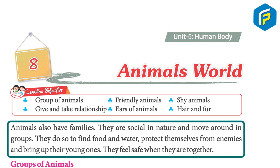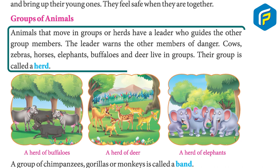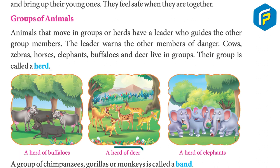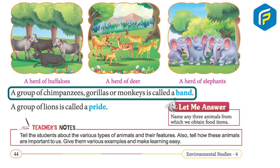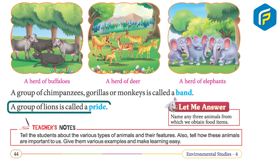Animals that move in groups or herds have a leader who guides the other group members. The leader warns the other members of danger. Cows, zebras, horses, elephants, buffaloes, and deer live in groups called a herd. A group of chimpanzees, gorillas, and monkeys is called a band. A group of lions is called a pride.